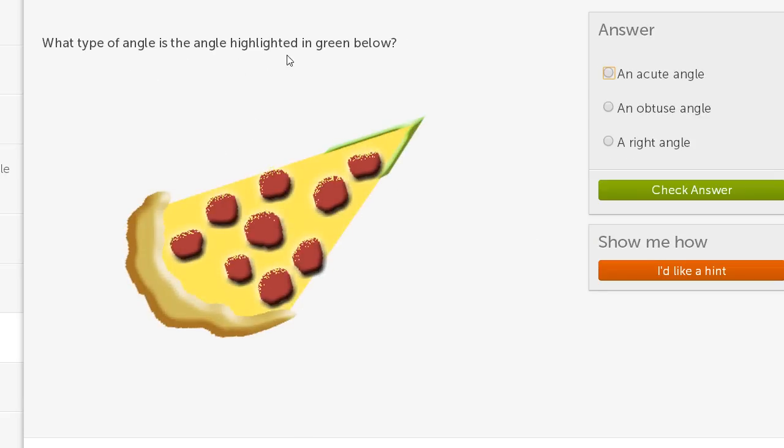What type of angle is the angle highlighted in green below? Well, this angle is less than 90 degrees. If it was equal to 90 degrees, this thing would come out like this. So this is clearly less than 90 degrees. This is an acute angle.